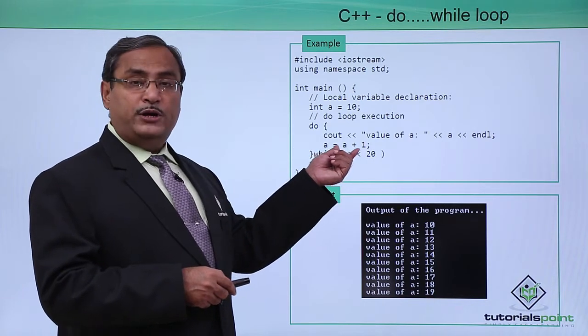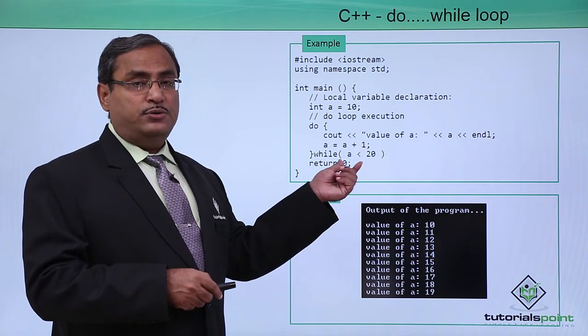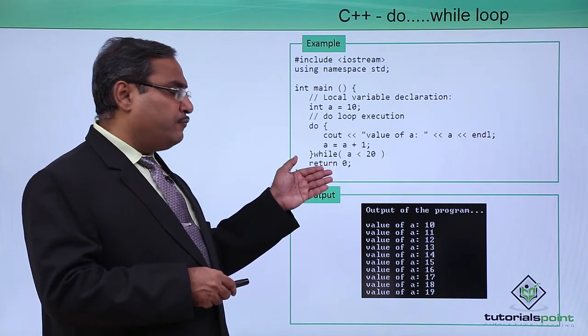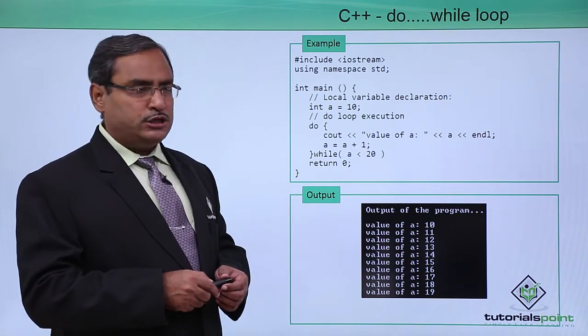When the value of a will be 20, then 20 is less than 20, this condition will become false. It will come out from the loop and return 0 will have the successful termination of the program.